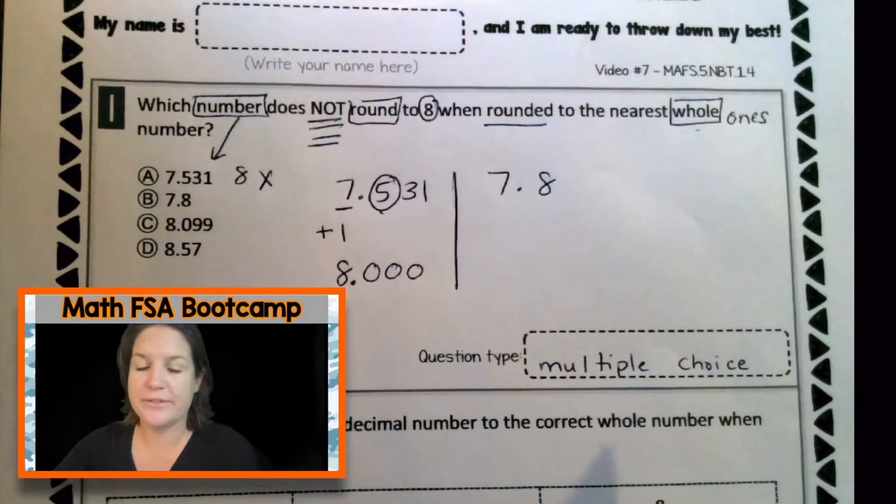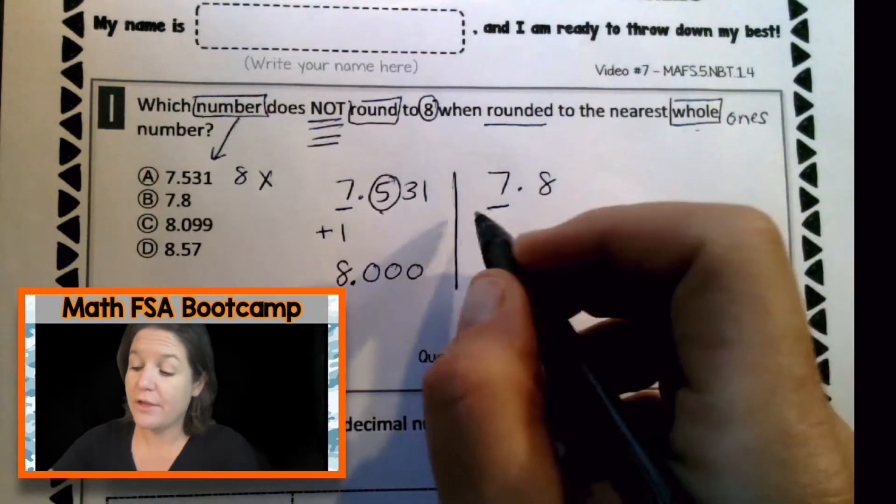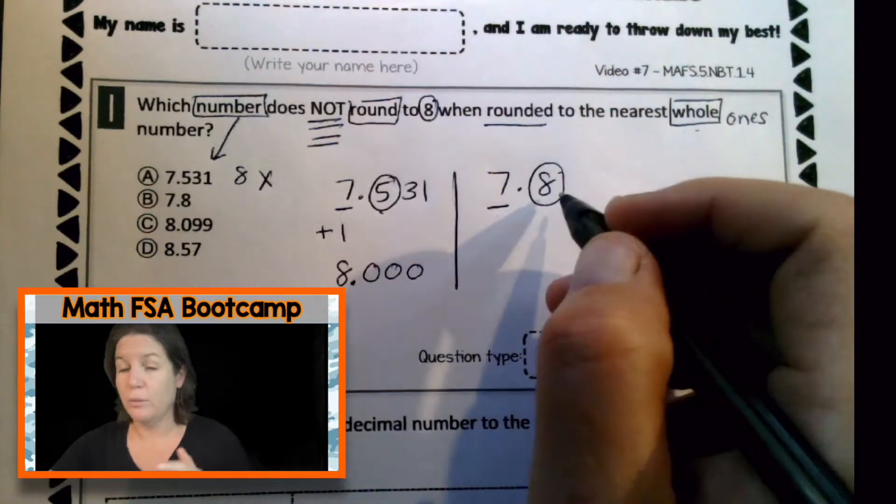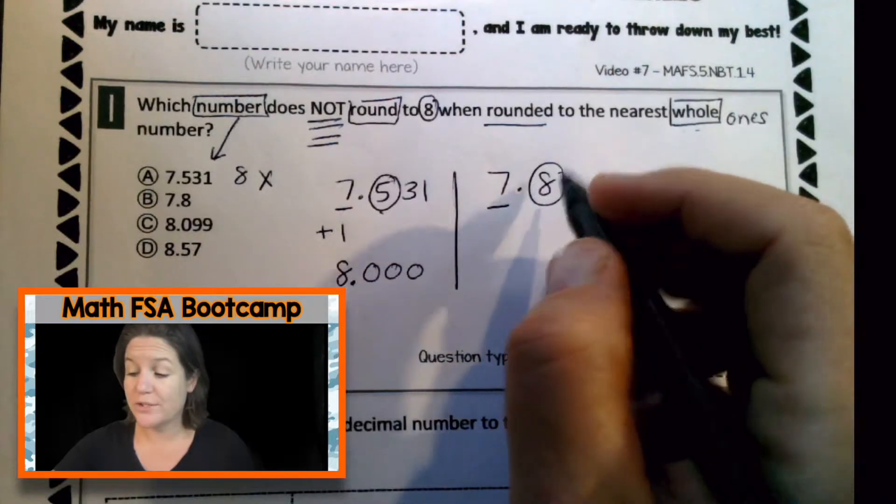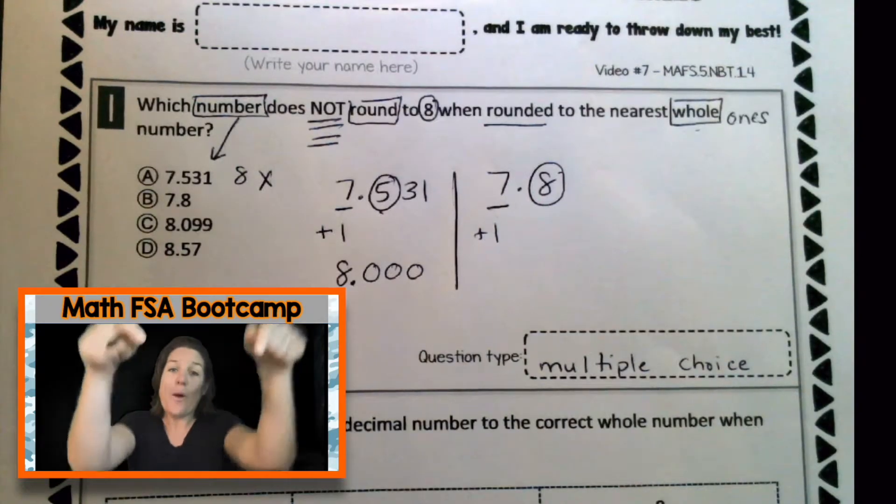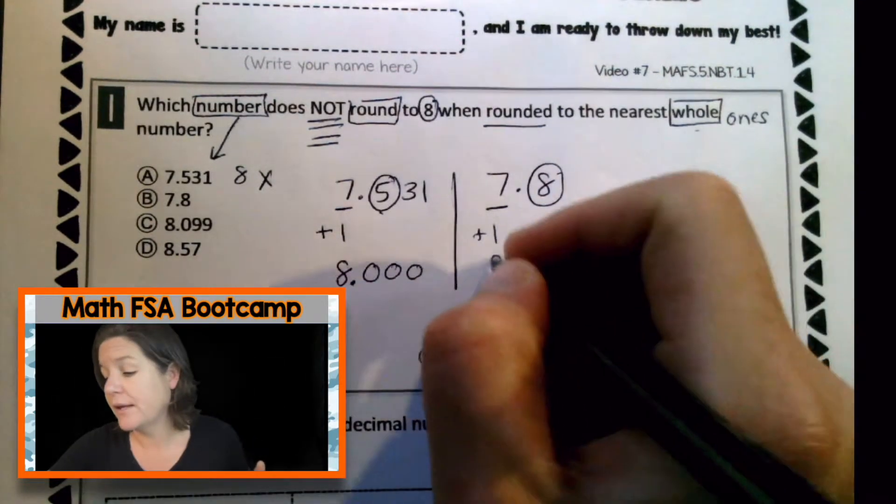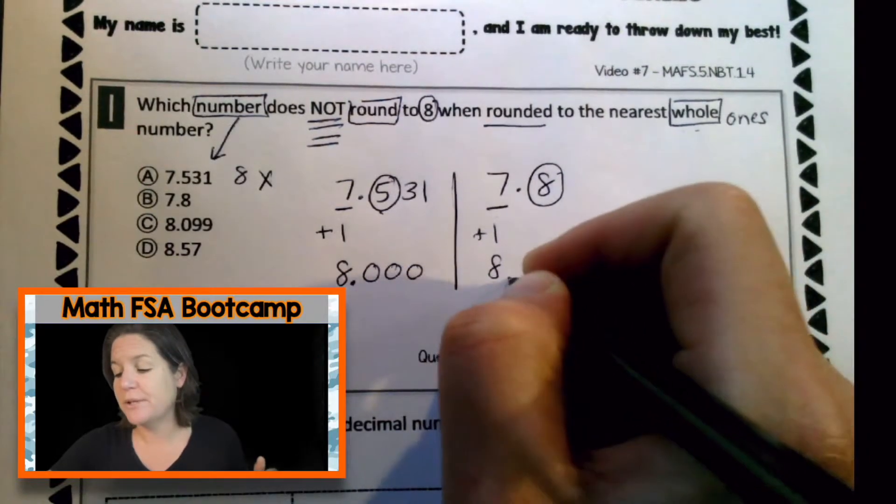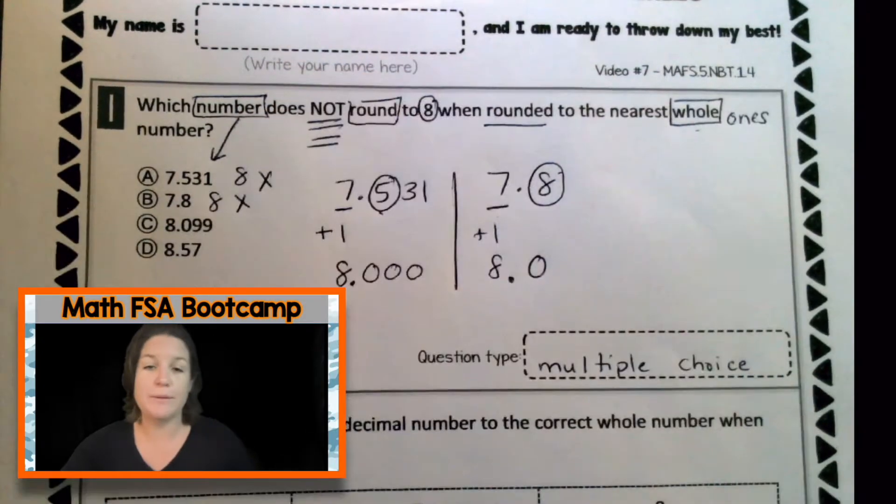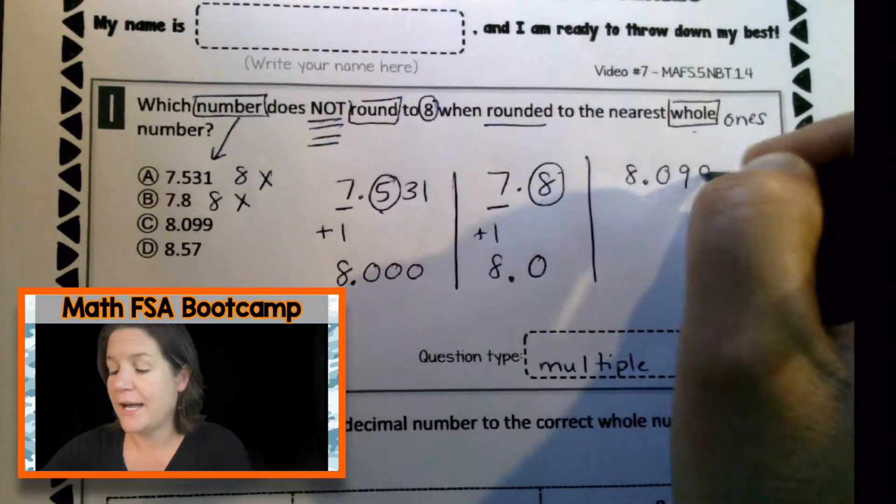Let's take a look at the next guy. Seven and eight tenths. When you round, find and underline the place. The whole. Spotlight to the right, decide the digits fate. Well, that is five or more. So we're going to add one to the rounding place. Let's take care of that right here. Right now. What's seven plus one again? Eight. And everything after becomes zero. Check me out now. I'm the rounding hero. Eliminate.